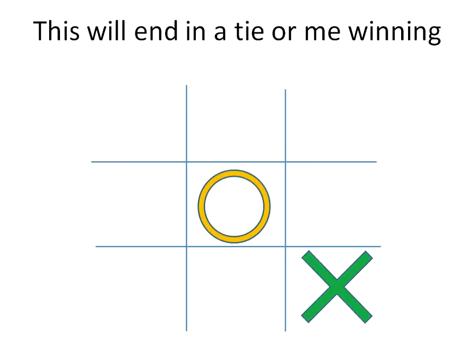If the second person, we'll call this player yellow, goes in the middle, then this game will end in either a tie or me winning. And I'll show you how that happens later on. But any other position on the board, and I will win.